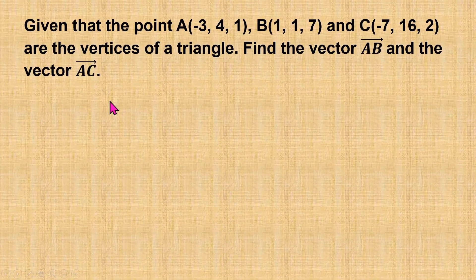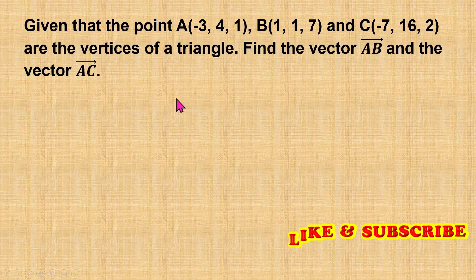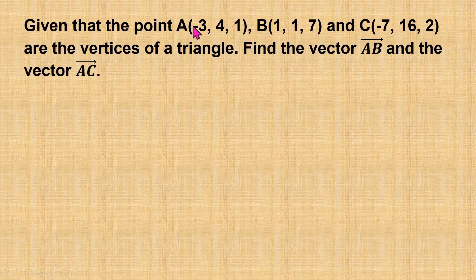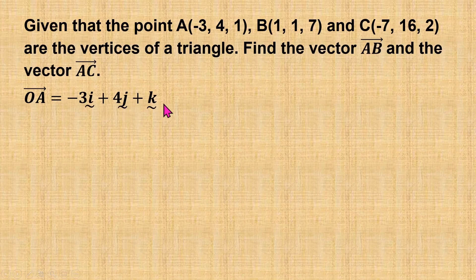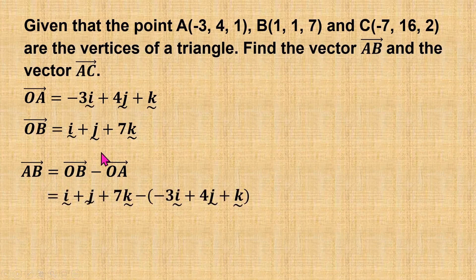Now let's apply what we have learned in answering the following question. Given that points A, B, and C are the vertices of a triangle, find vector AB and vector AC. Since we are given the coordinates of points A, B, and C, to find vector AB we use the position vectors of A and B. From the coordinates of point A, the position vector of A is −3i + 4j + k. From the coordinates of point B, the position vector OB is i + j + 7k. To find vector AB, it equals position vector B minus position vector A. We substitute the position vectors of B and A and simplify to get vector AB.